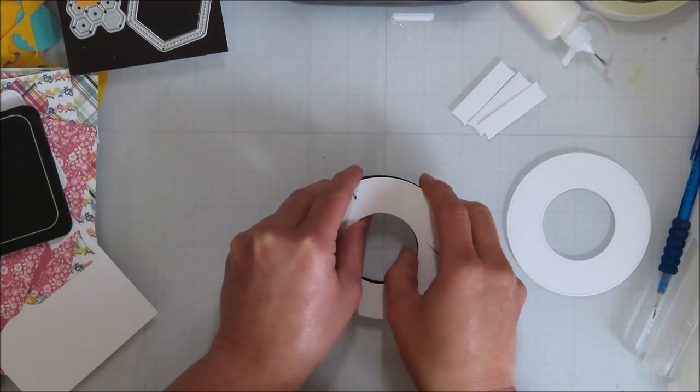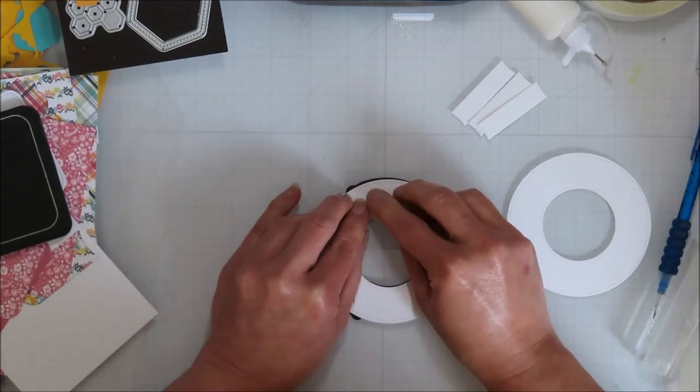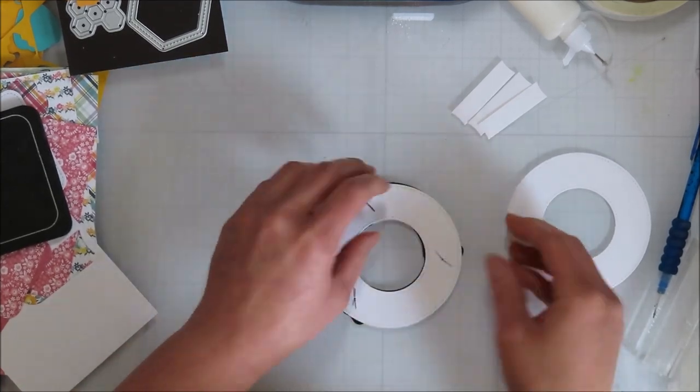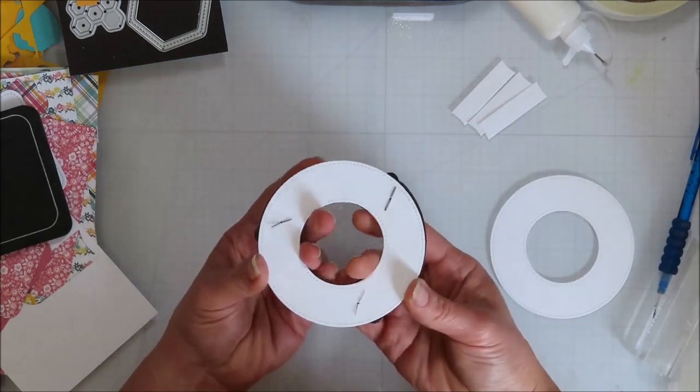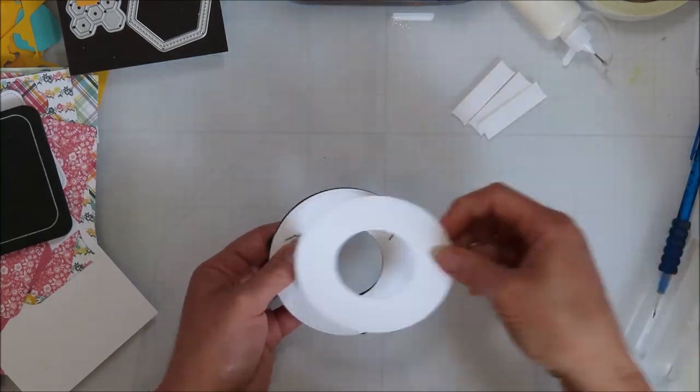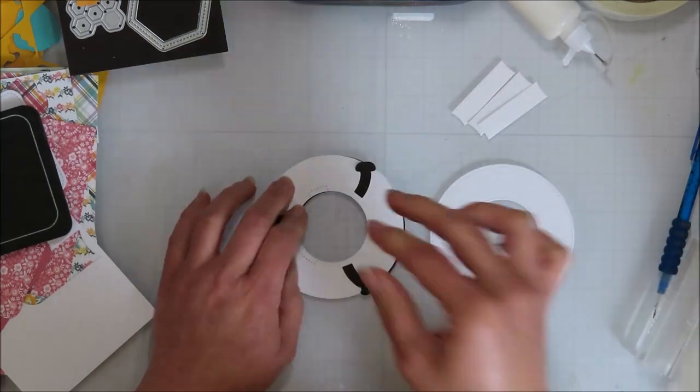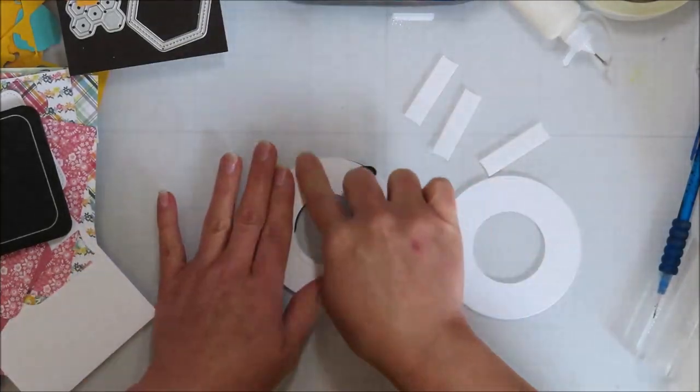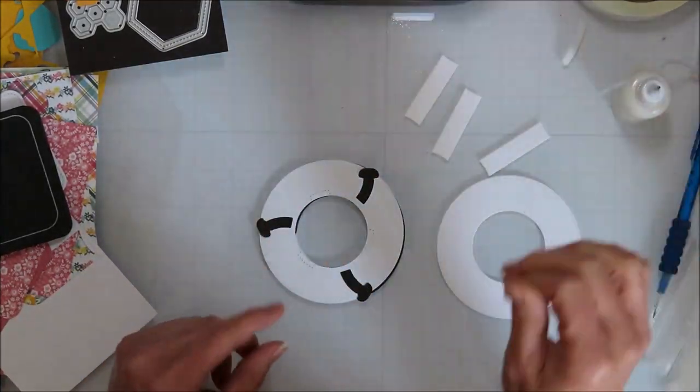But it really, really helps when you understand how a mechanism works. And so for me to understand this one, I actually have an acetate one. And so I can figure out exactly what shows in the window, what doesn't show in the window, what matters, what doesn't really matter.